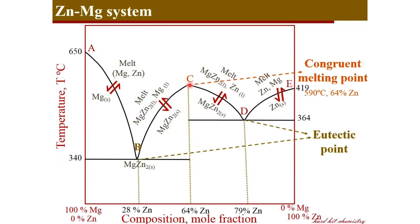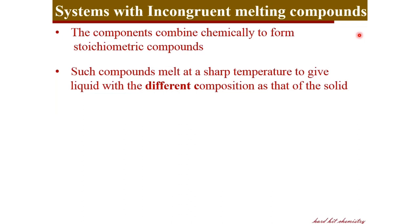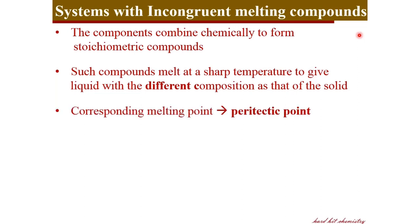Now we move to the incongruent or non-congruent melting system. Here the two components combine chemically to form a stoichiometric compound, but this compound melts with a different composition than in the solid — the stoichiometry of the liquid and solid phases is different. The corresponding melting point is called the peritectic point, rather than the congruent melting point.